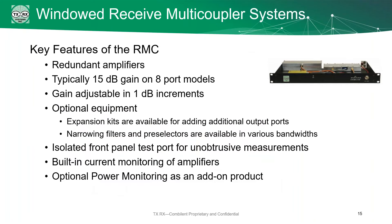Some key features of this receive multi-coupler: the first is redundant amplifiers. If one amplifier inside fails, there's a second — actually four amplifiers in total — that will pick up the slack. Typically we've got 15 dB of gain for eight-port models; adding more ports means a little bit more loss and less gain overall. This gain is adjustable in 1 dB increments. We also have expansion kits for adding additional ports, narrowing filters, and pre-selectors in whatever bandwidths you need. We've got an isolated front panel test port — that sampler mentioned earlier — for unobtrusive measurements, plus built-in current monitoring of the amplifier, and optional power monitoring as an additional product.